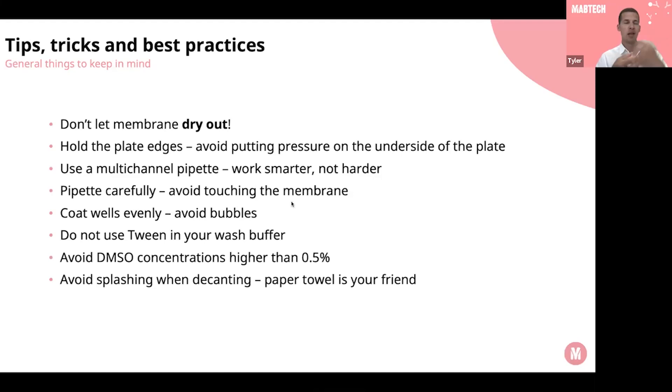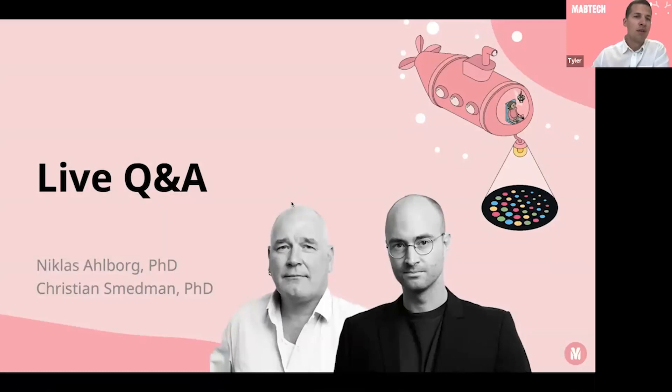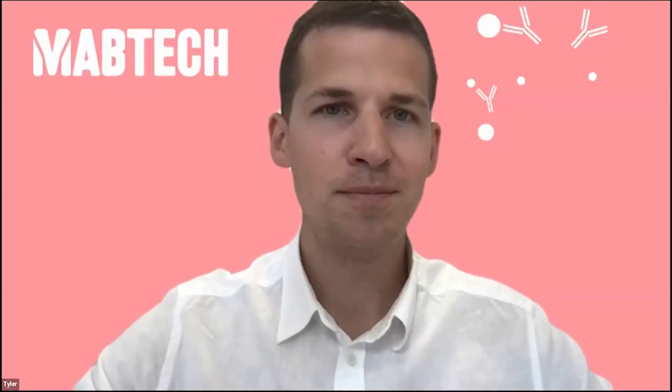For the Q&A session, we have Associate Professor Niklas Albori from Stockholm University and Dr. Kristian Smedman from Mabtech. First question: can you use PBS rather than sterile water to wash after ethanol? Yes, you can — as long as the PBS is sterile. Next question: how long do you leave the washing solution between washes? Any duration works, even hours. The goal of washing after ethanol is to dilute the ethanol, so time is not of the essence — you can do it fairly quickly with repeated washes. As soon as you've added the wash to the plate, you can decant it right away since you're doing it five times.